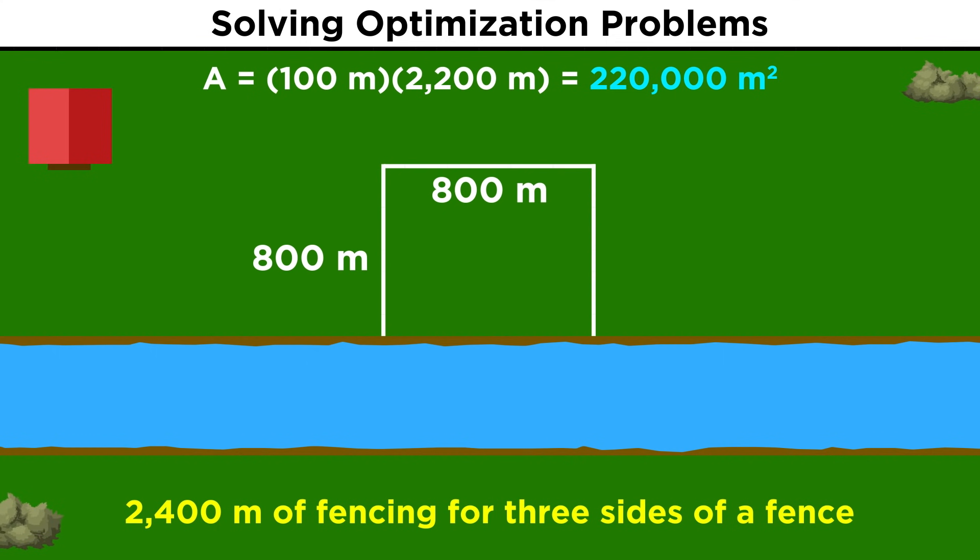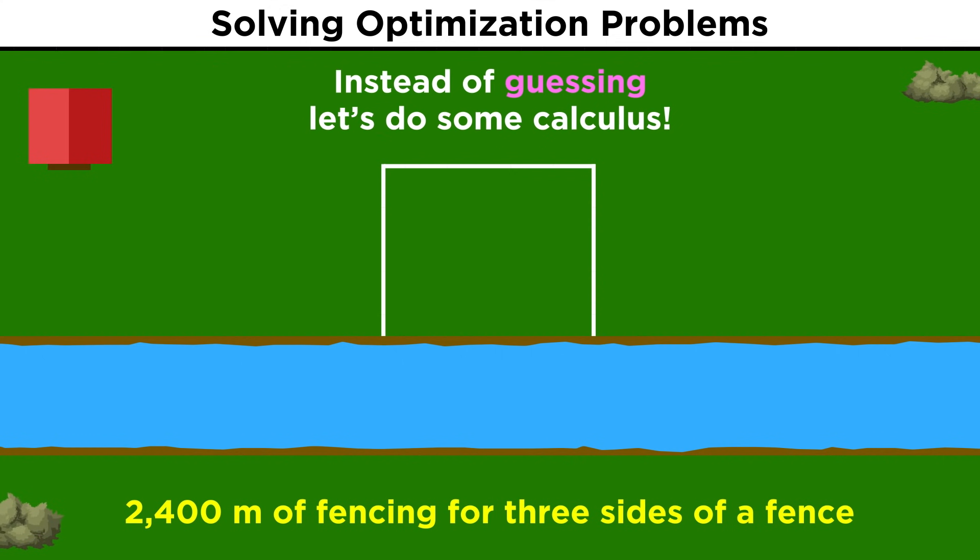How about a square with eight hundred meters per side? That will give us six hundred forty thousand square meters. Definitely an improvement, but is this really the best we can do? We could guess and check all day, but why don't we just do some calculus instead?